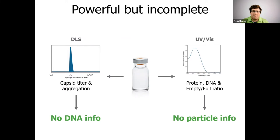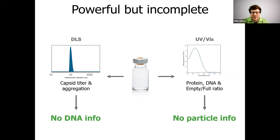DLS gives you capsid titer information and can give you aggregation information, but it doesn't say anything about the DNA — is there actually DNA inside my capsids? While if you're using UV-Vis, you can get total protein numbers, you can get total DNA numbers. You can even get a DNA-to-protein ratio, so a percent-full ratio, but it doesn't say anything about whether this is actually contained in intact capsids. Each technology gets valuable information separately, but none of them are actually complete.